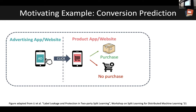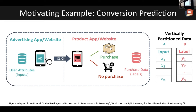Conversion prediction tries to model this behavior — it tries to estimate, for a given ad link for a specific user, the probability that the user ends up making a purchase on the product website. This forms an important part of ad ranking algorithms, useful in figuring out which ads to show which users. The interesting thing about this problem is that the data necessary to train such a model is distributed or partitioned vertically across the advertising company and the product company.